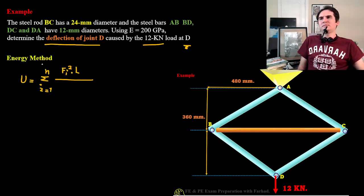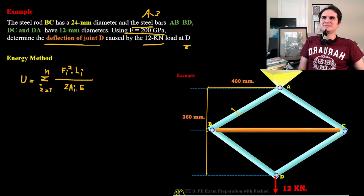From Energy Method, we remember that strain energy for discrete part is summation of internal force of the member squared times length of that member, over two area of that member times the modulus of elasticity, which remains the same because all the material are made of steel, and that's A36 steel.